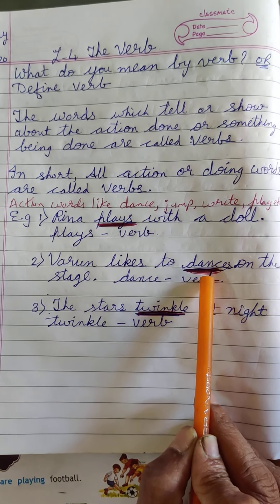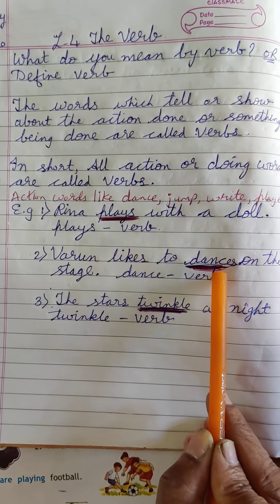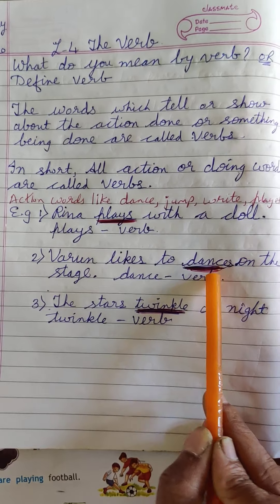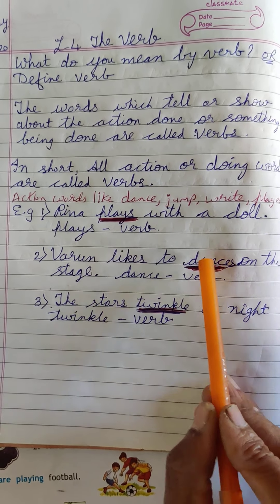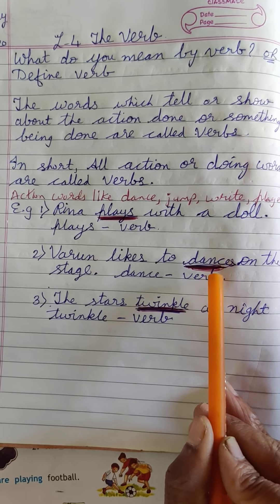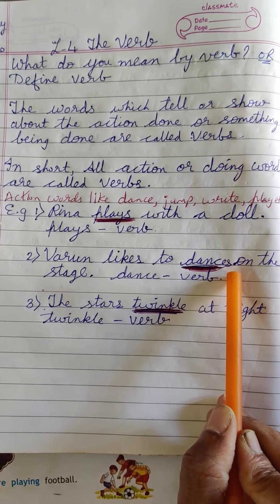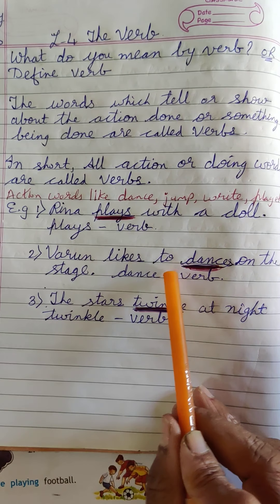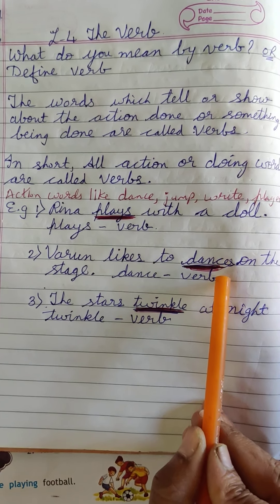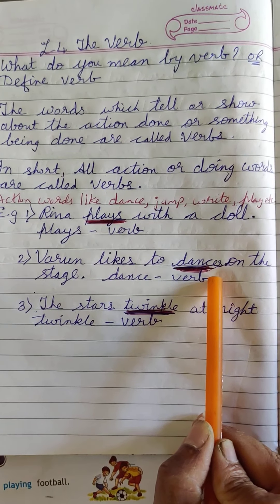So the verb will come in the plural form. After the word 'verb', the word 'dance' — I'll add S at the end. So it has become the plural form.